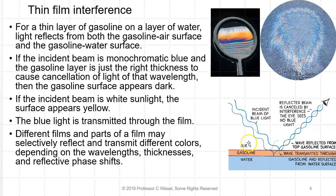For a thin layer of gasoline on a layer of water, light will reflect from both the air-gasoline interface and the gasoline-water interface. If the incident beam is monochromatic blue and the gasoline layer is just the right thickness to cause cancellation at that wavelength, the gasoline surface will appear dark. The blue light will go through into the water. If the incident beam is white sunlight, the surface would appear yellow. The blue light has been transmitted through the film. Different films and parts of film may selectively reflect and transmit different colors depending on the wavelengths, thicknesses, and reflective phase shifts.